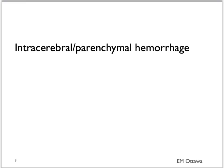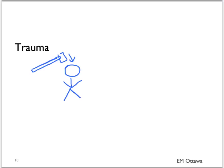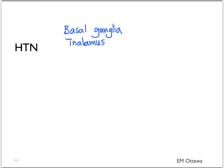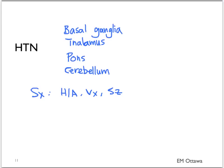We will now move on to intracerebral and parenchymal hemorrhage. Again, it can be divided into traumatic and non-traumatic causes. Trauma is caused by direct head injury and is often associated with other bleeds; the extent of the bleed determines the patient's presentation and neurological status. For non-traumatic intracerebral bleeds, the main risk factor is hypertension. Common sites include the basal ganglia and thalamus, pons, and cerebellum. The patient will present with sudden onset headache, vomiting, seizure, decreased level of consciousness, and focal neurological deficits corresponding to the affected brain region. The risk of intracerebral bleeds also increases with the use of sympathomimetic drugs.